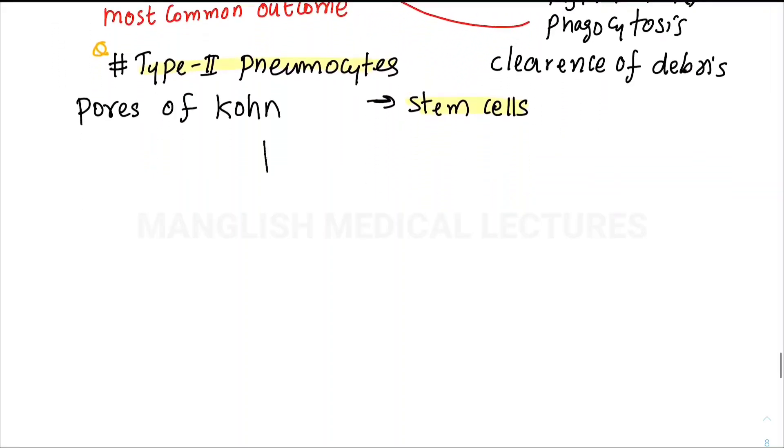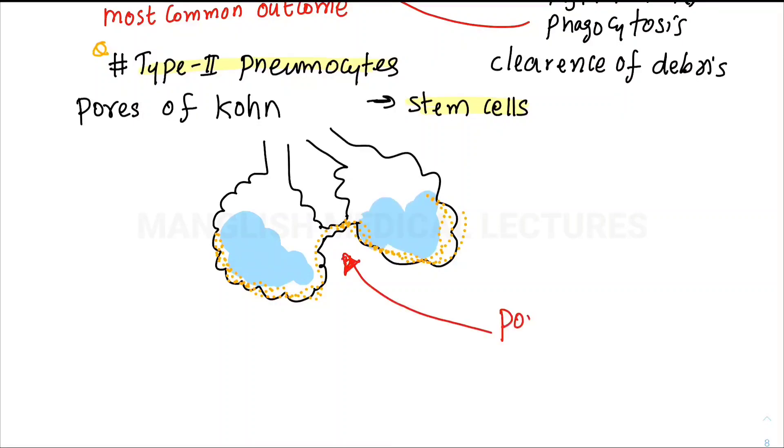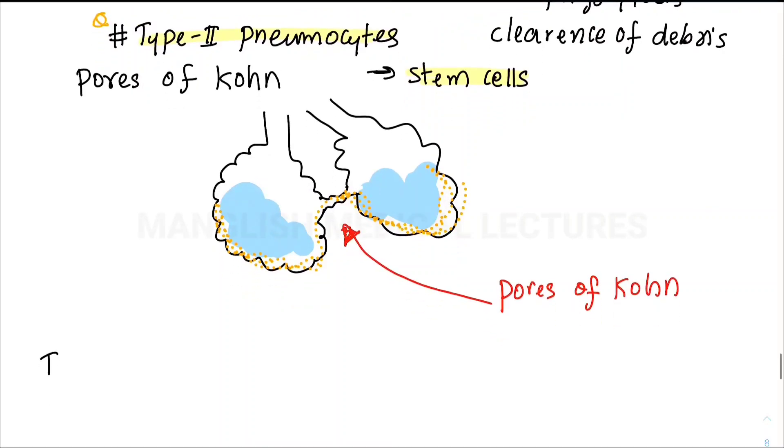Now we move to the pores of Kohn. Consider two alveoli—they are connected by pores of Kohn. A consolidation or infection gets spread to the other alveoli through the pores of Kohn.